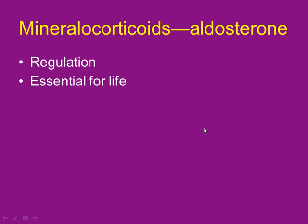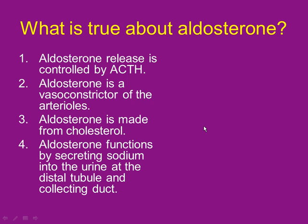Aldosterone works on the kidney to make you retain sodium. What's true about aldosterone: all the adrenal cortical hormones are made from cholesterol — that's absolutely true. It's regulated primarily by the RAAS, not the ACTH pathway. Aldosterone doesn't secrete sodium into the urine — nothing does that. Is aldosterone a vasoconstrictor? No, that's ADH, also known as vasopressin.